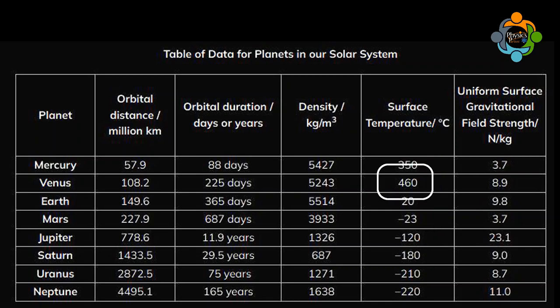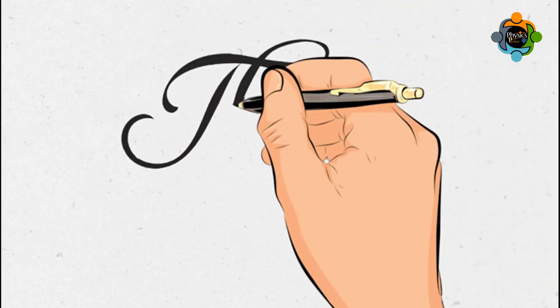Surface temperature decreases with orbital distance, except for Venus. Venus has a dense atmosphere of carbon dioxide, trapping heat through the greenhouse effect. The surface gravitational field strength does not depend only on the planet's size, but also its mass. This is why, although Uranus is four times larger than Earth, it has a smaller gravitational field strength because it is less dense.